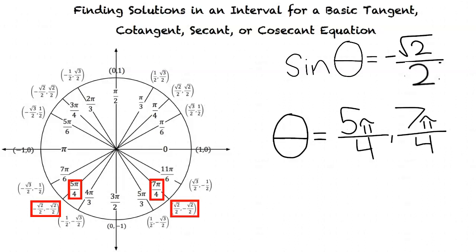To summarize the process for finding solutions: first, isolate the tangent, cotangent, secant, or cosecant value. Once isolated, find the coordinate values on the unit circle that match the equation. Then find the radian values corresponding to those coordinates — that gives the final answer. This topic covered finding solutions in an interval for basic tangent, cotangent, secant, and cosecant equations.